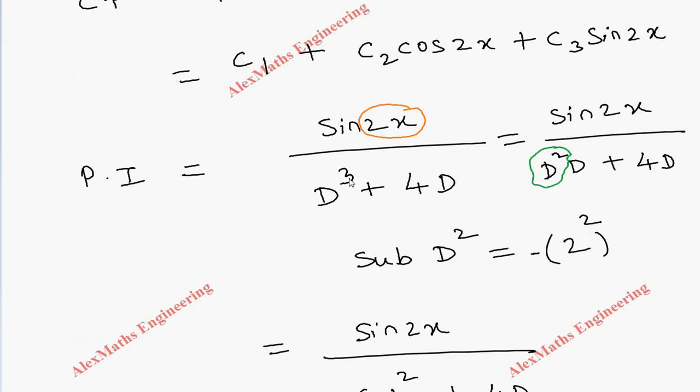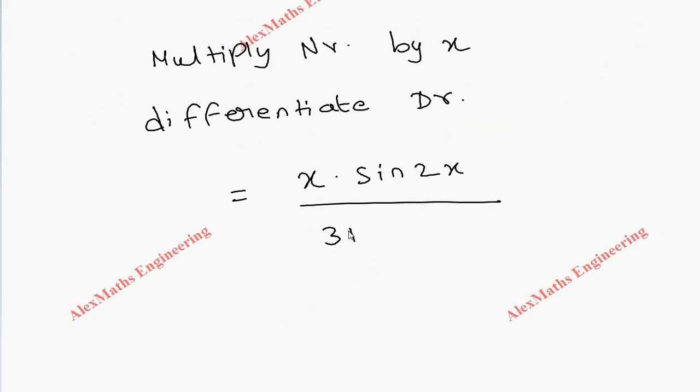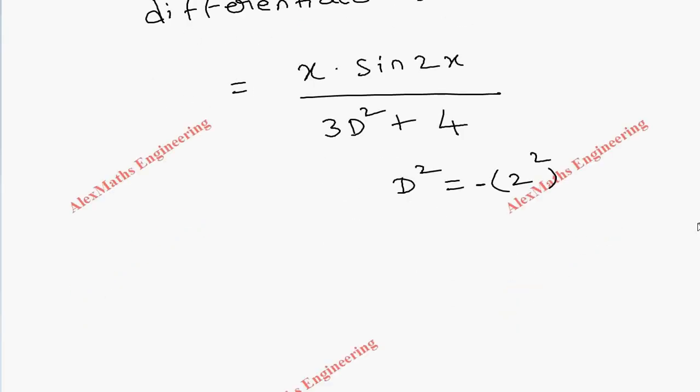So 3D² + 4. Once again, we have to substitute D² as 2² with a minus sign outside. So it is going to be x·sin(2x) by 3 into 2², so here there is a minus sign I will write it here, plus 4.